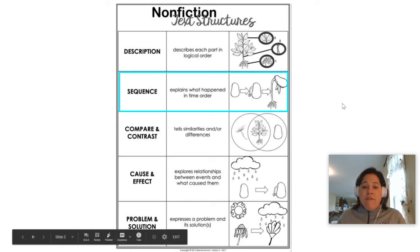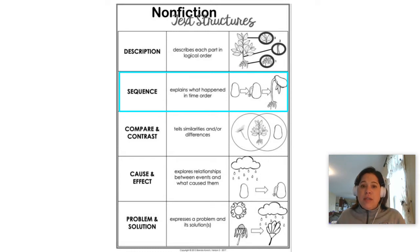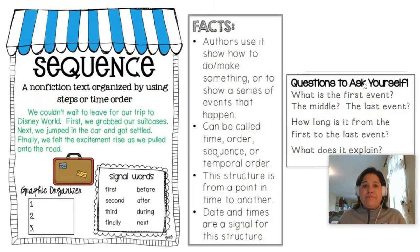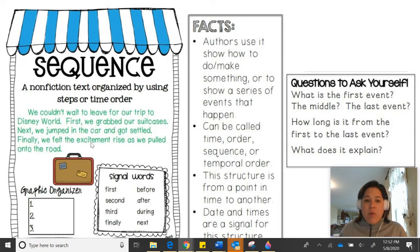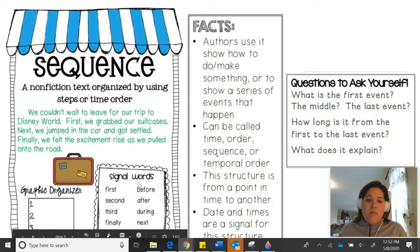We are focusing our attention on sequence text structure, using signal words for a time order to help us understand the text that we are reading. Sequence text structure is when things are written in a time order. That time order can use sequence words such as first, second, third, and finally, before, after, during, or next.